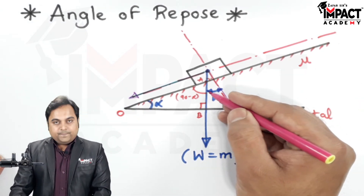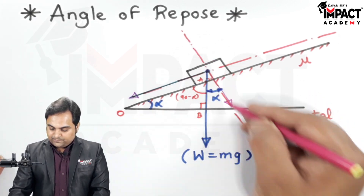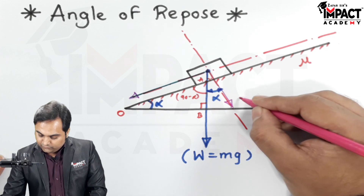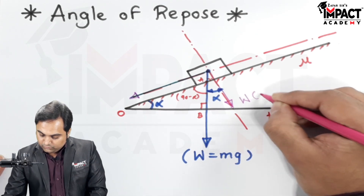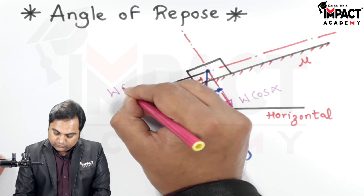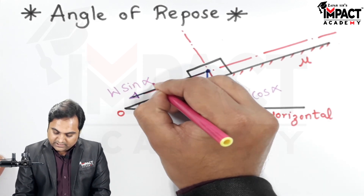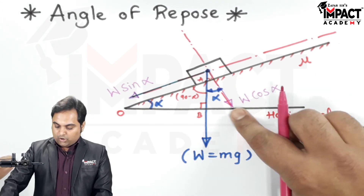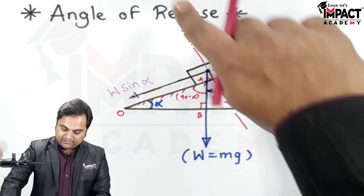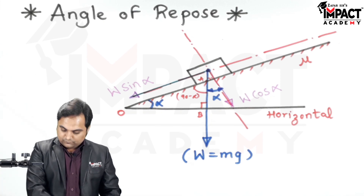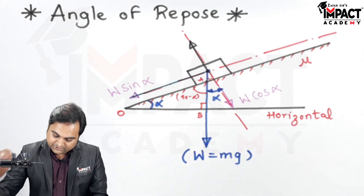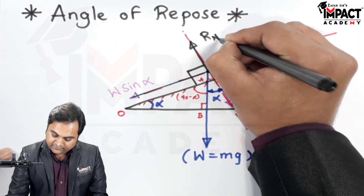Since alpha is given with respect to this perpendicular, the perpendicular component value would be w cos alpha, and the parallel component would be w sine alpha. Opposite to w cos alpha, since it is perpendicular to the plane, a normal reaction is offered in the upward direction. Here is the normal reaction, denoted by R suffix n.